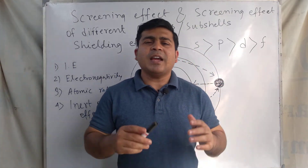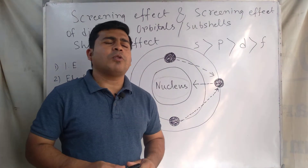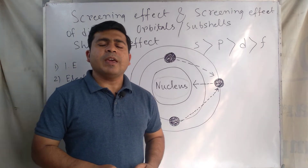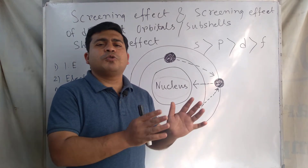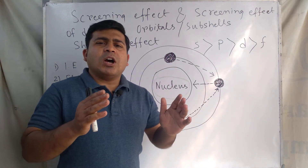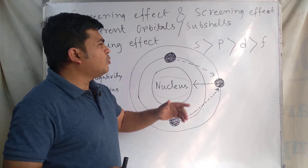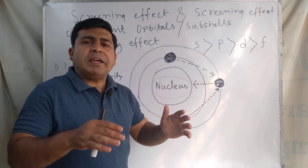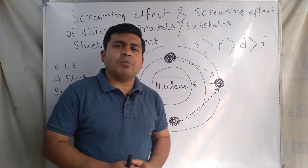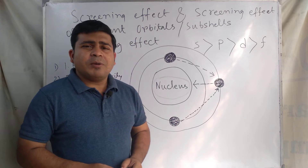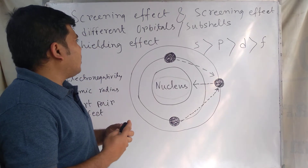Another factor is the inert pair effect — these factors can be explained using the concept of screening effect or shielding effect. Regarding the shielding effect of different sub-shells, S electrons penetrate more closely to the nucleus, so the S electron is tightly attracted by the nucleus. One requires more energy to remove electrons from the S sub-shell or S orbital than from the P sub-shell or P orbital. This is the concept of screening effect.